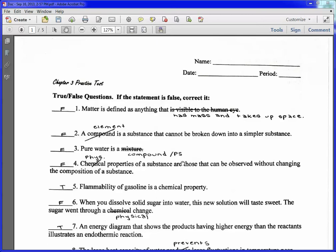For number one, it says matter is defined as anything that is visible to the human eye. Well, since fire, for example, is visible to the human eye but it does not have a mass and does not actually take up space, that statement is false. So I corrected it saying it has mass and takes up space.